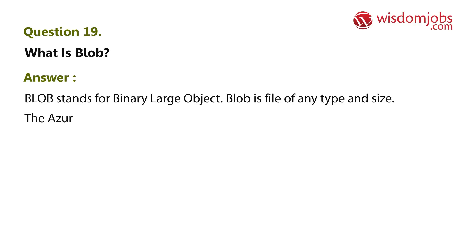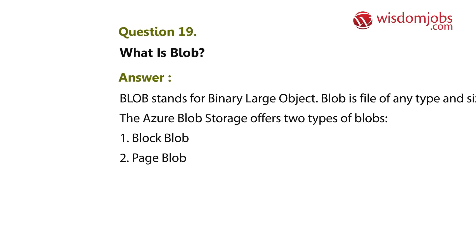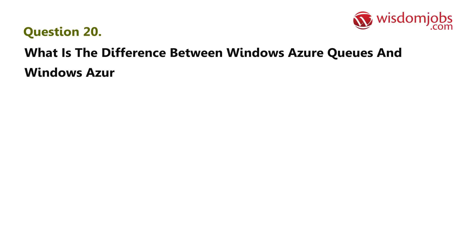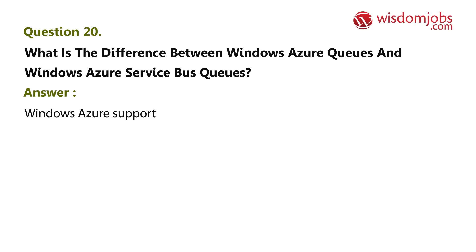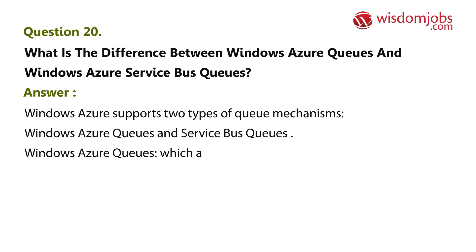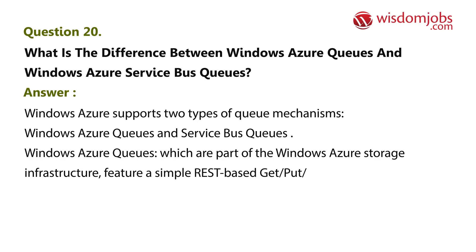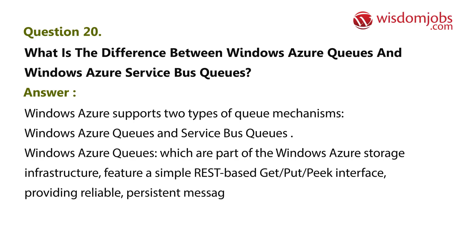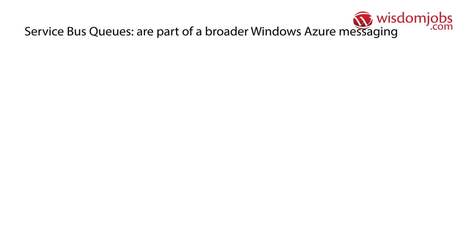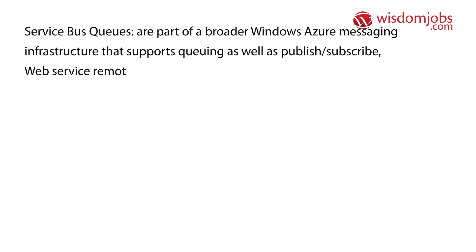The Azure Blob Storage offers two types of blobs: Block Blob and Page Blob. Question 20: What is the difference between Windows Azure Queues and Windows Azure Service Bus Queues? Answer: Windows Azure supports two types of queue mechanisms. Windows Azure Queues, which are part of the Windows Azure storage infrastructure, feature a simple REST-based GET/PUT/PEEK interface providing reliable persistent messaging within and between services. Service Bus Queues are part of a broader Windows Azure messaging infrastructure that supports queuing as well as publish-subscribe and web service patterns.